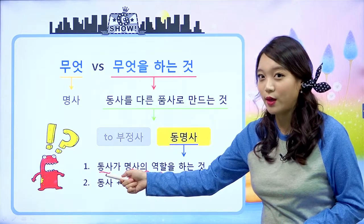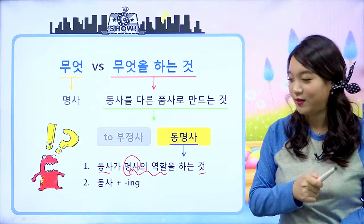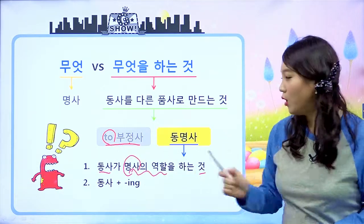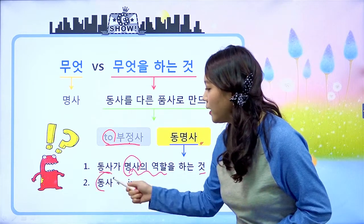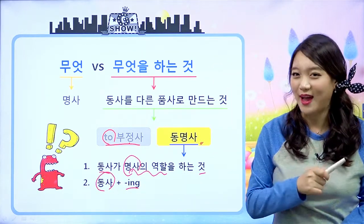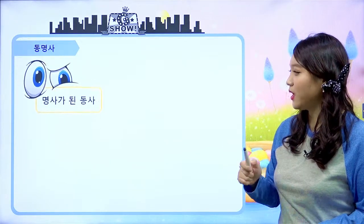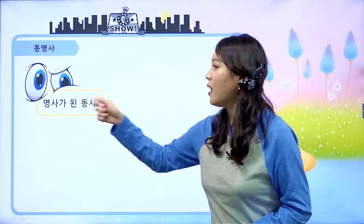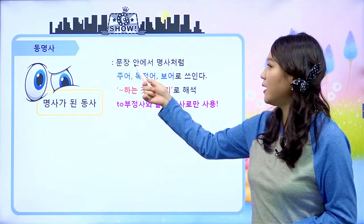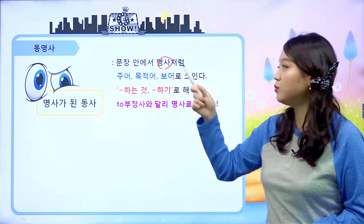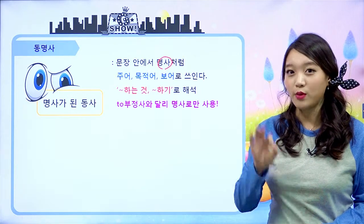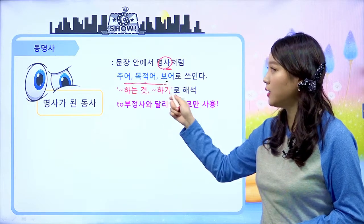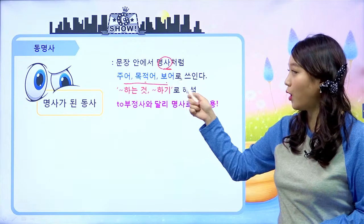동명사는 동사가 명사의 역할을 하는 것입니다. 투부정사는 동사 원형 앞에 투를 붙이기만 하면 됐었죠. 동명사는 동사에다가 ing를 붙여서 만듭니다. 투부정사는 명사뿐만 아니라 형용사나 부사 역할도 했었죠. 그런데 동명사는 명사 역할만 한다 — 이게 큰 차이점입니다. 문장 안에서 명사가 하는 역할인 주어, 목적어, 보어 역할을 합니다.